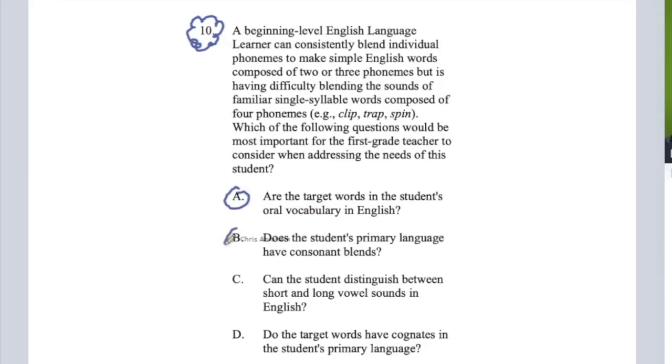We have some options here. Now before I get to the options, let's think about this scenario. We have an entering level English language learner, and they're just starting off building their receptive and expressive language and hearing all those phonemes in the English language. It says here that they're able to blend simple words made up of two or three phonemes. So let's write down some of those examples.